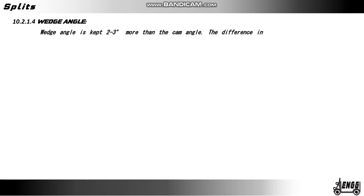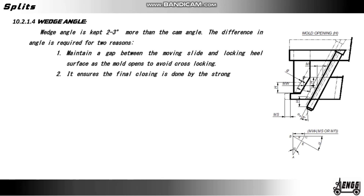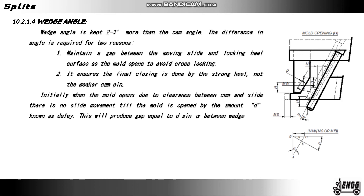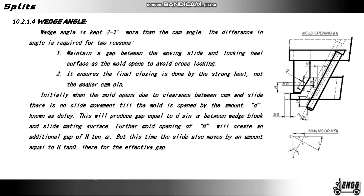Wedge angle: the wedge angle is kept 2 to 3 degrees more than the cam angle. This difference is required for two reasons: to maintain a gap between the moving slide and locking heel surface as the mold opens, and to avoid cross-locking — it ensures the final closing is done by the strong heel, not the weaker cam. Initially when the mold opens, due to clearance between cam and slide, there is no slide movement until the mold is opened by the amount D, known as delay. This produces a gap equal to D × sin α between the wedge block and slide mating surface. Further mold opening of h creates an additional gap of h × tan α, but the slide also moves by h × tan θ. Therefore the effective gap is: G = D sin α + h(tan α − tan θ).